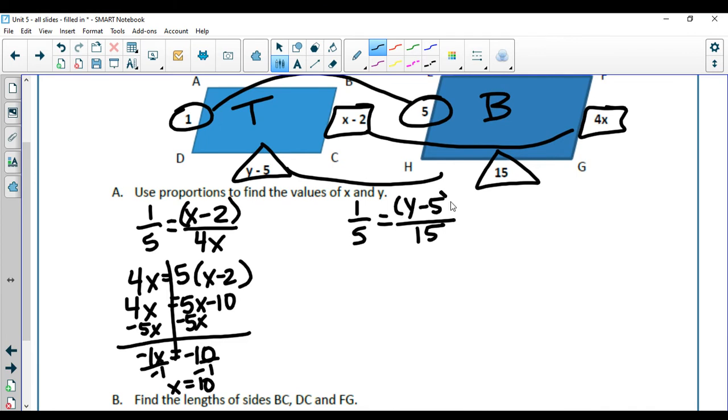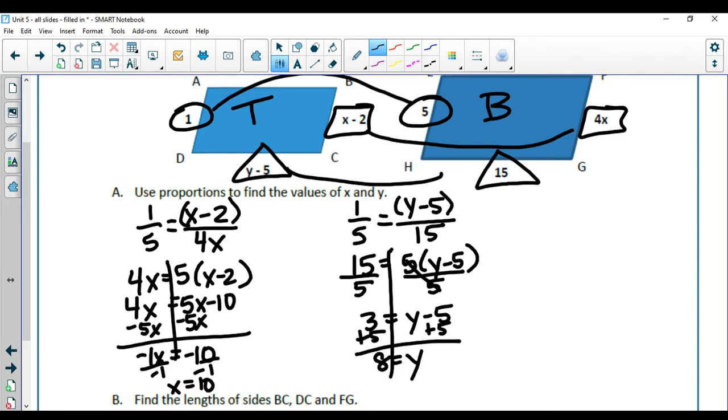Solving for the y over here. 15 times 1 is 15 equals 5 times parentheses y minus 5. Because it's a plain number, I can use that shortcut, divide by 5. I get 3 equals y minus 5. Add the 5 to both sides, and I get 8 equals y here.